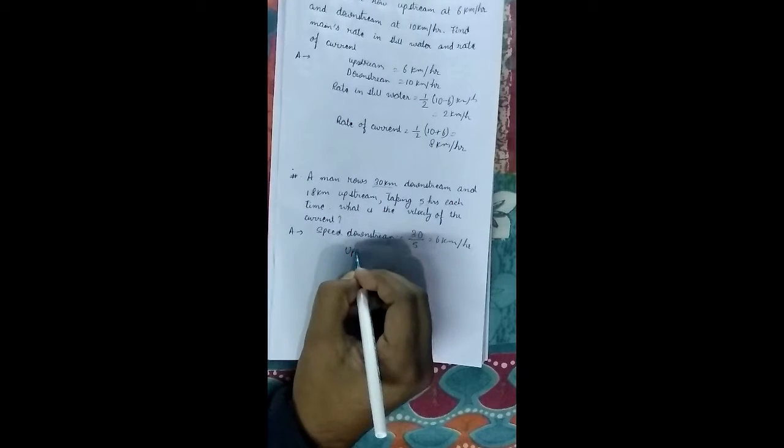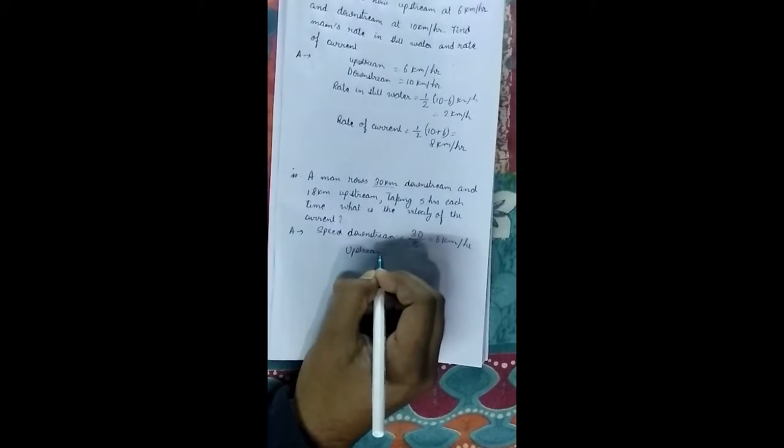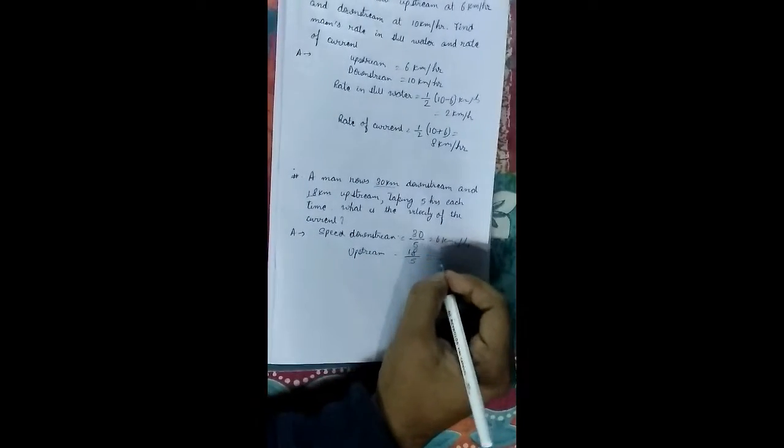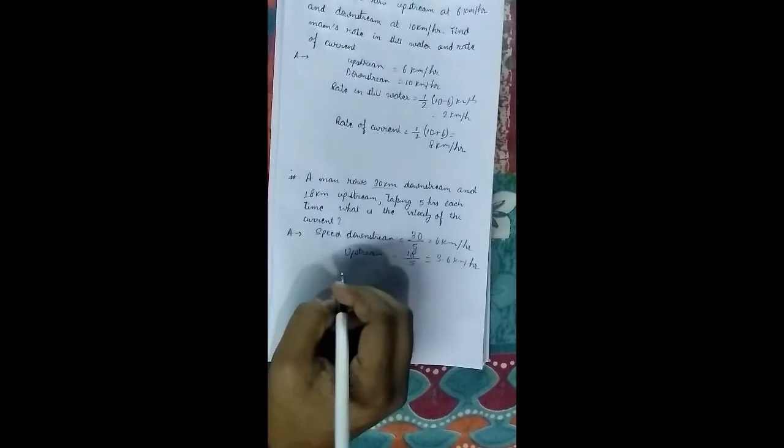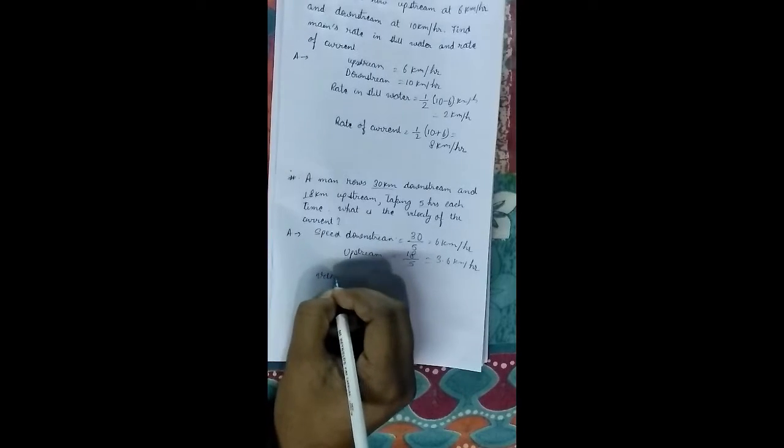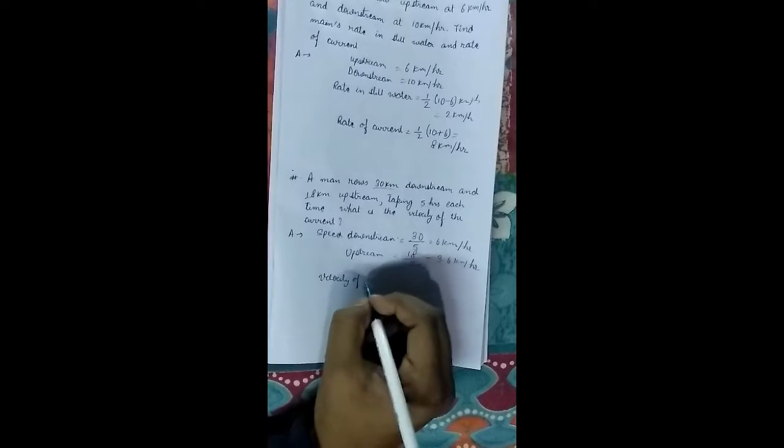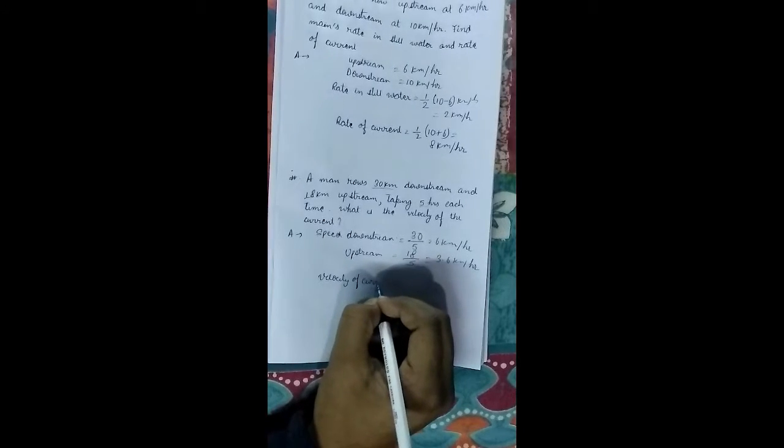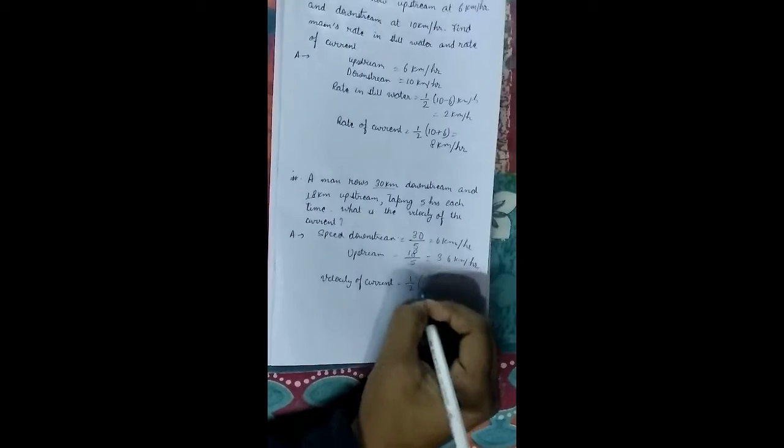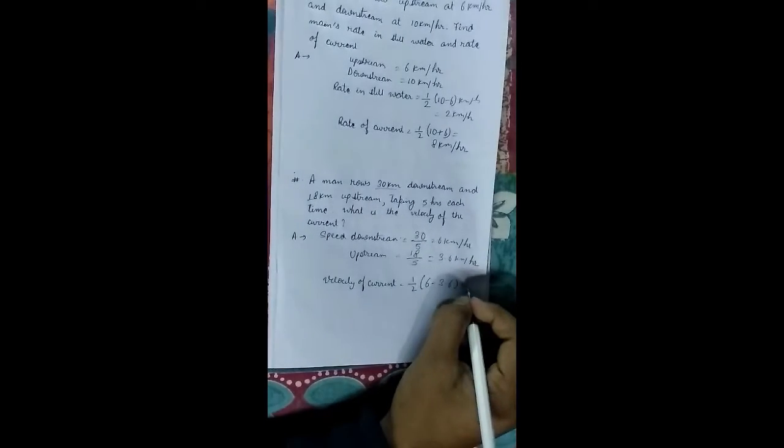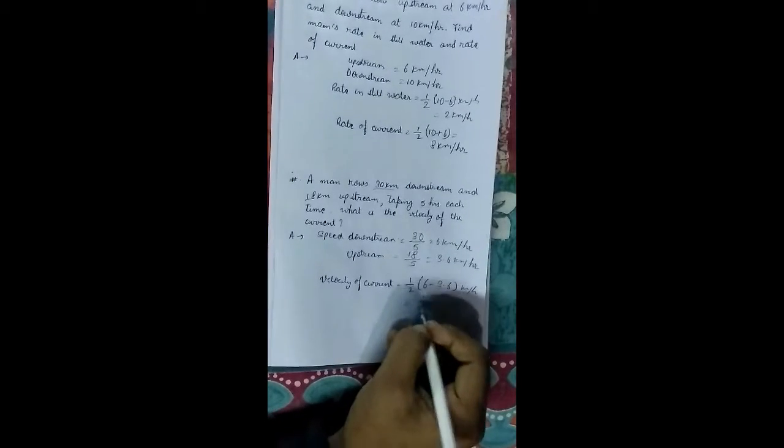Similarly the upstream will be 18 by 5, so 18 and time 5. So you will get 3.6 km per hour and therefore the velocity of current.